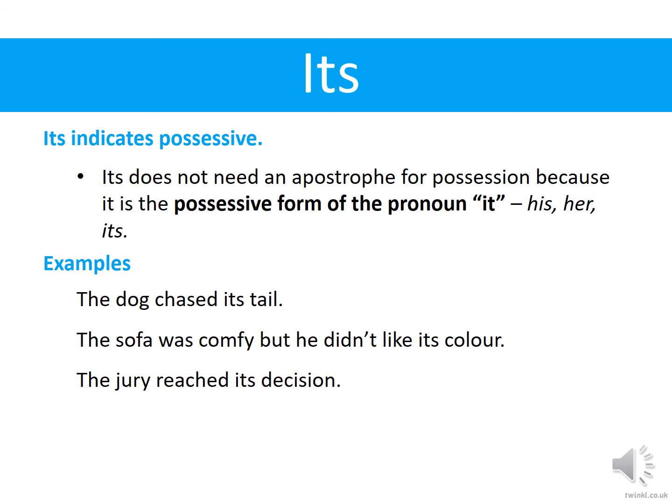'The sofa was comfy but he didn't like its colour.' The possessive there is the colour of the sofa — the sofa's colour. So that's why we say 'its colour' without the apostrophe. Again you can check it: 'he didn't like it is colour' — that's just not right. 'He didn't like it has colour' — that doesn't make sense. So we know it doesn't need an apostrophe.